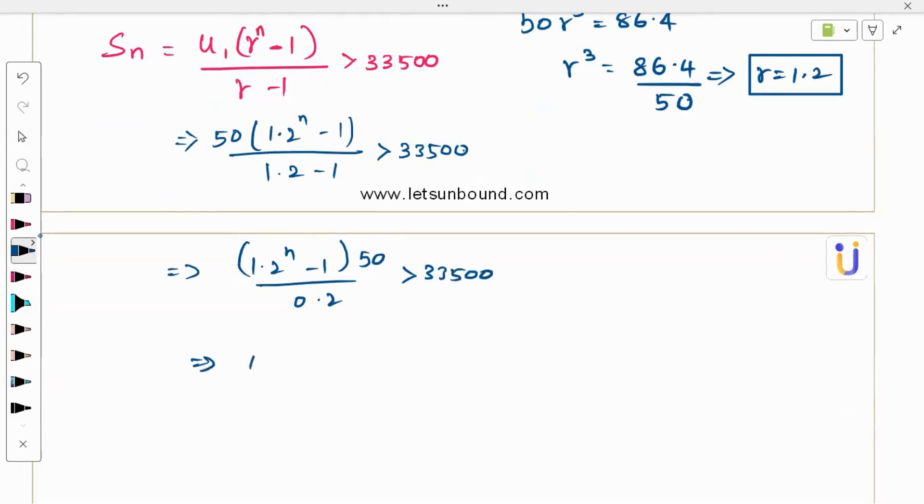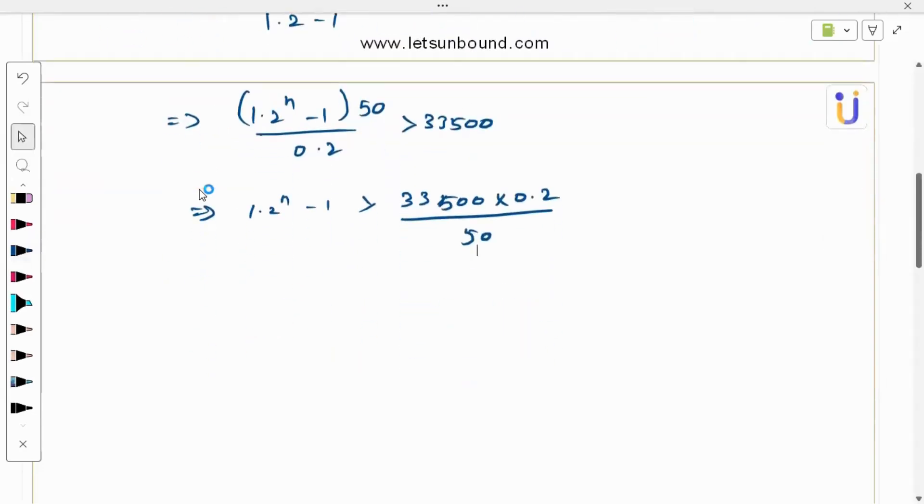So 1.2 power n minus 1. This will switch. 0.2 will get multiplied. 33,500 times 0.2 and 50 will go divide. Simplify: 1.2 power n is greater than 33,500 times 0.2. If we simplify, it will be better. When you solve all this, you will get 134 plus and then the minus 1 will shift here plus 1.